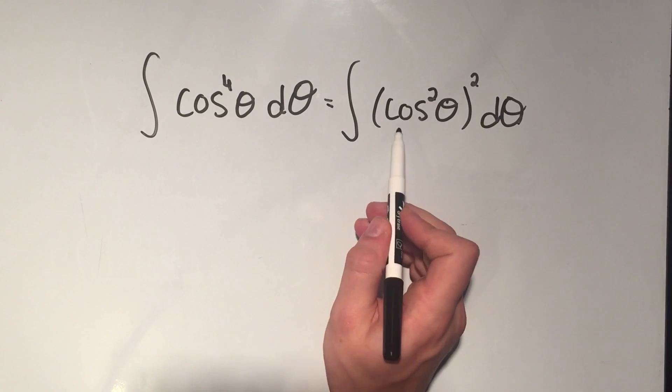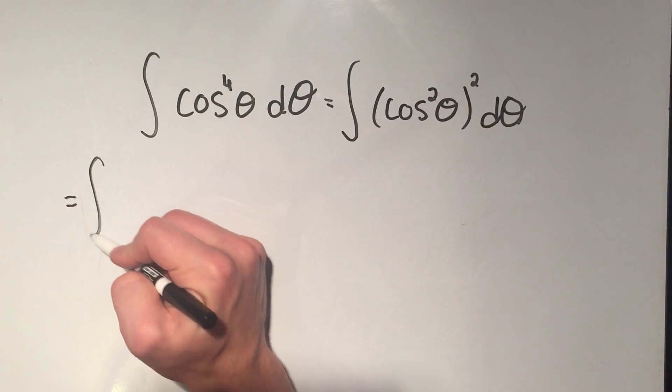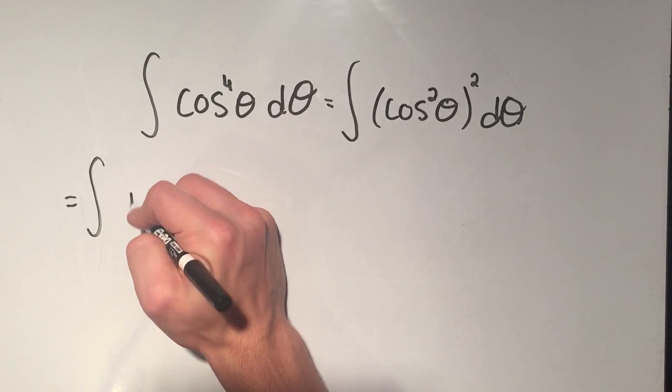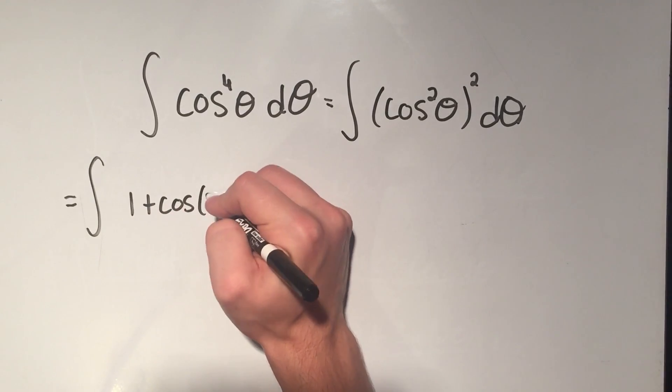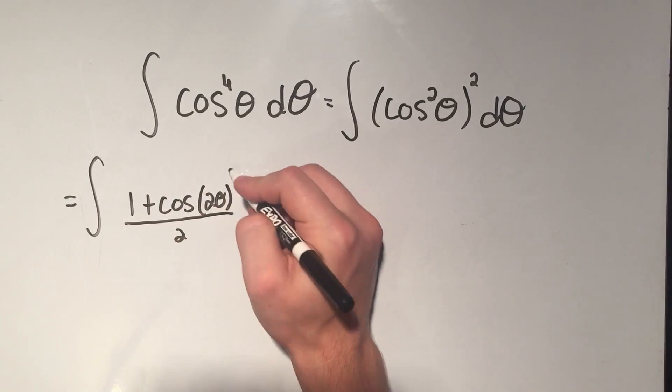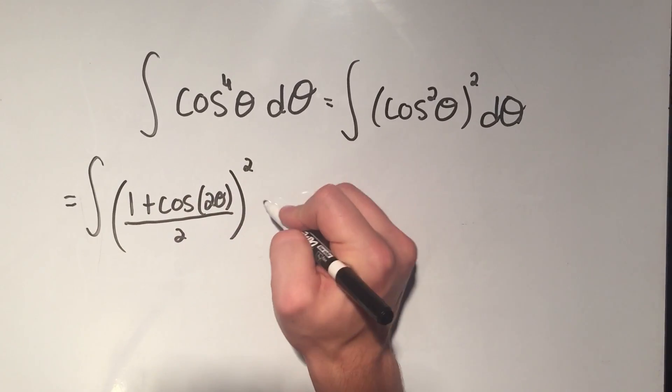Well, then on the inside of these parentheses, I can apply that identity that says cosine squared is 1 plus cosine 2 theta over 2. Now that's all squared.